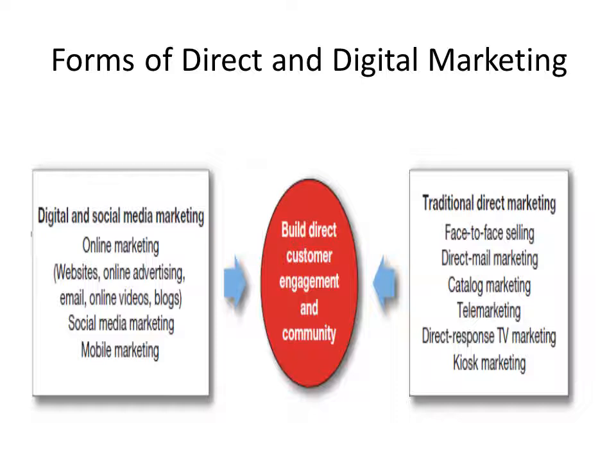We divide the chapter into two main sessions: the first is digital and social marketing, and the other is traditional direct marketing. The digital and social media marketing section is divided into multiple types: online marketing, online advertising, email, online videos, blogs, social media marketing, and mobile marketing. Both types share the main objective of building direct customer engagement and community.